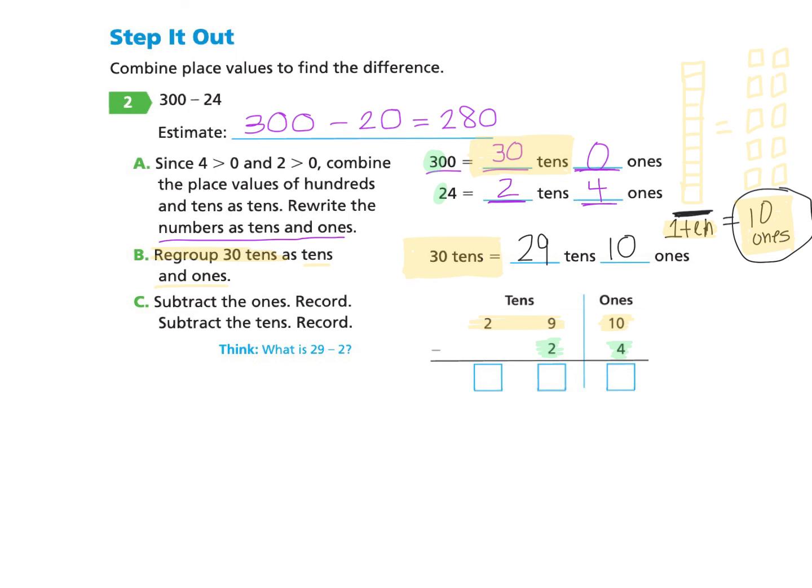And now we can do part C. Subtract the ones column. When we subtract the ones column, 10 take away four will give us six. And then we need to subtract the tens column. And 29 take away two makes 27. If you would like to go back and rewatch any of this video, you can do so and pause along the way anytime as needed.